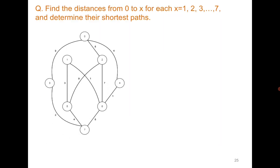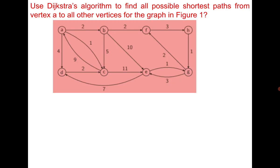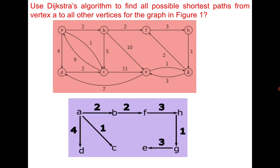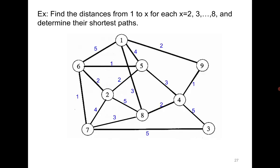You can try one more exercise. Starting from vertex 0, find the shortest path to all other vertices — here is the required answer. There is also one more exercise which you can try by yourself, and here is the required answer for that as well.